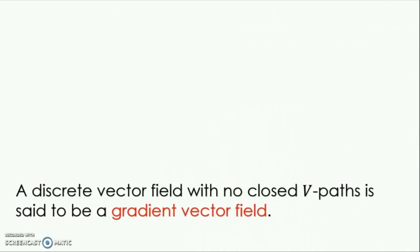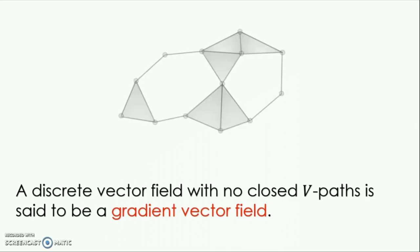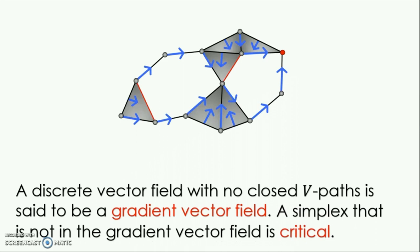A discrete vector field, then, with no closed V-paths is said to be a gradient vector field. Now with this new language of gradient vector fields, we can model the sequence of collapses that we performed earlier with arrows forming a gradient vector field. Because this is a matching, there will always be some simplices that are not included in our gradient vector field. Those are shown in red, and they are, of course, precisely the simplices that we ripped out. A simplex that is not in the gradient vector field is called critical.